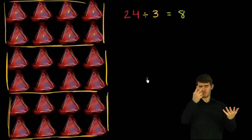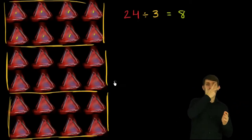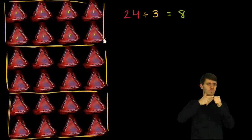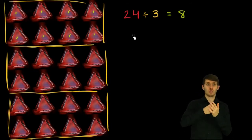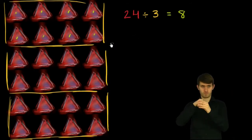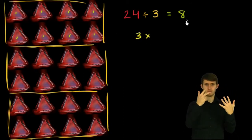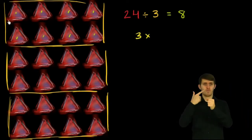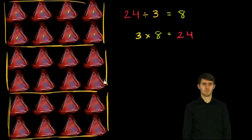Now you might say this is very similar to what we saw in multiplication. In multiplication, we said if we have three groups of 8, we could view that as 3 times 8 and get 24. And you are exactly right. We could also write that 3 times 8 — so if I have 3 groups of 8 — that is going to be equal to 24.